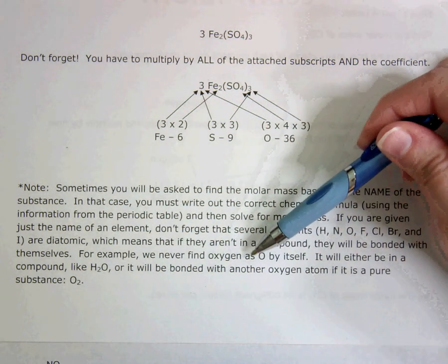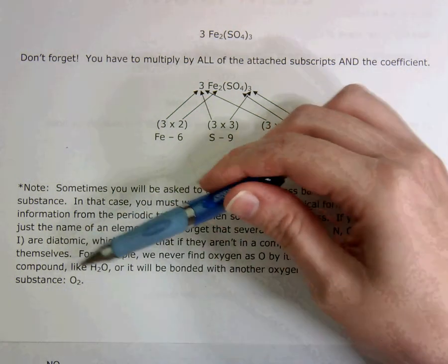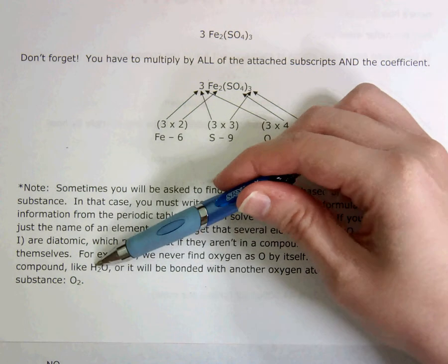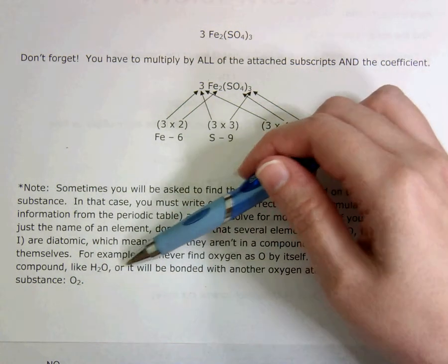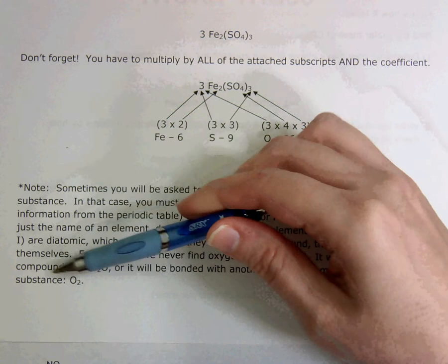For example, we never find oxygen as O by itself. It will either be in a compound like H2O, see there's only one O here, but it's okay because it's bonded with hydrogen, or it will be bonded with another oxygen atom if it is a pure substance.